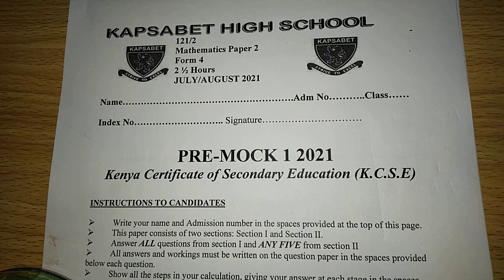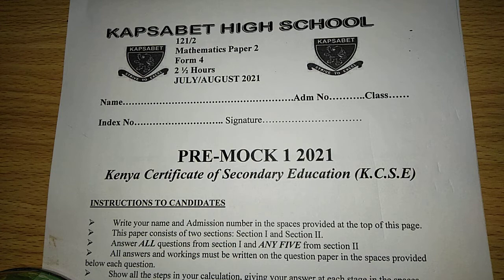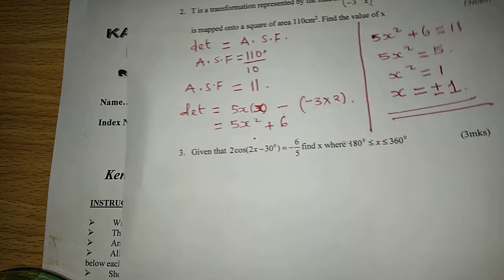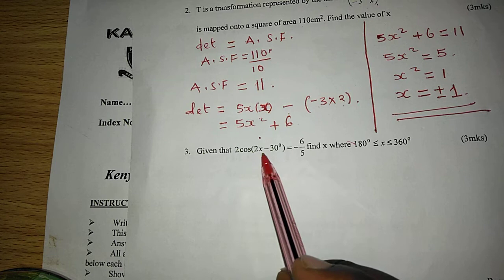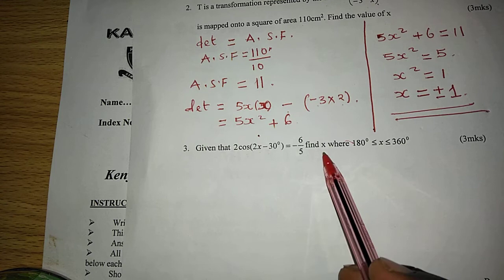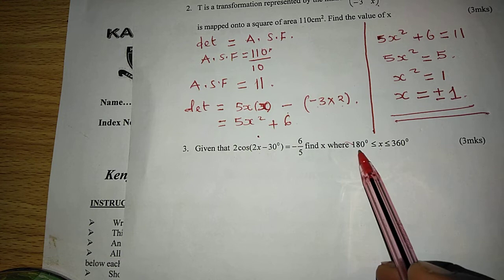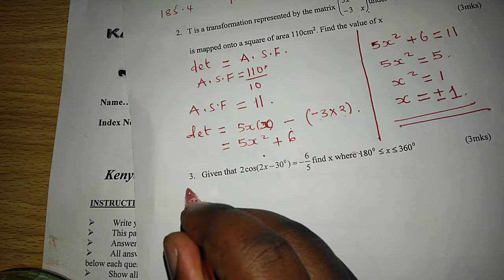Thank you for joining this lesson. We are still continuing with the KCSE past paper, Math Paper 2, the Premo, whereby we are now going to number 3. It is a question in trigonometry, whereby we are told that given that 2 cosine of (2x minus 30 degrees) equals negative 6 out of 5, find x where x ranges between 180 and 360 degrees.